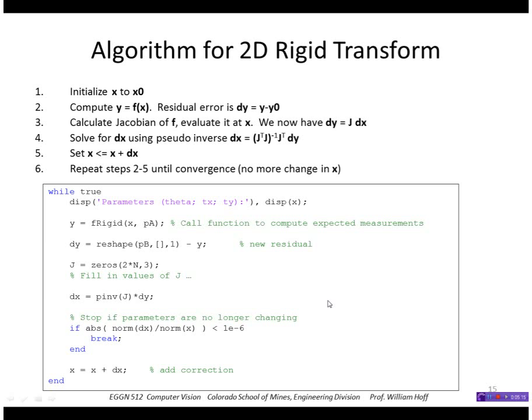And this is the second half of the algorithm where it does a loop where it computes the current estimate of y given the current parameters.